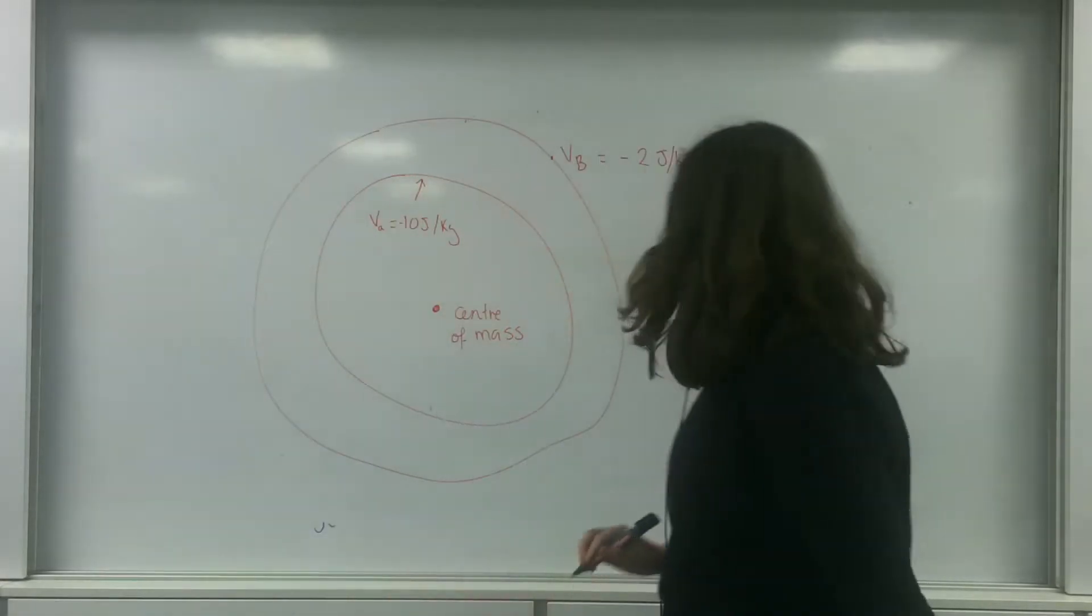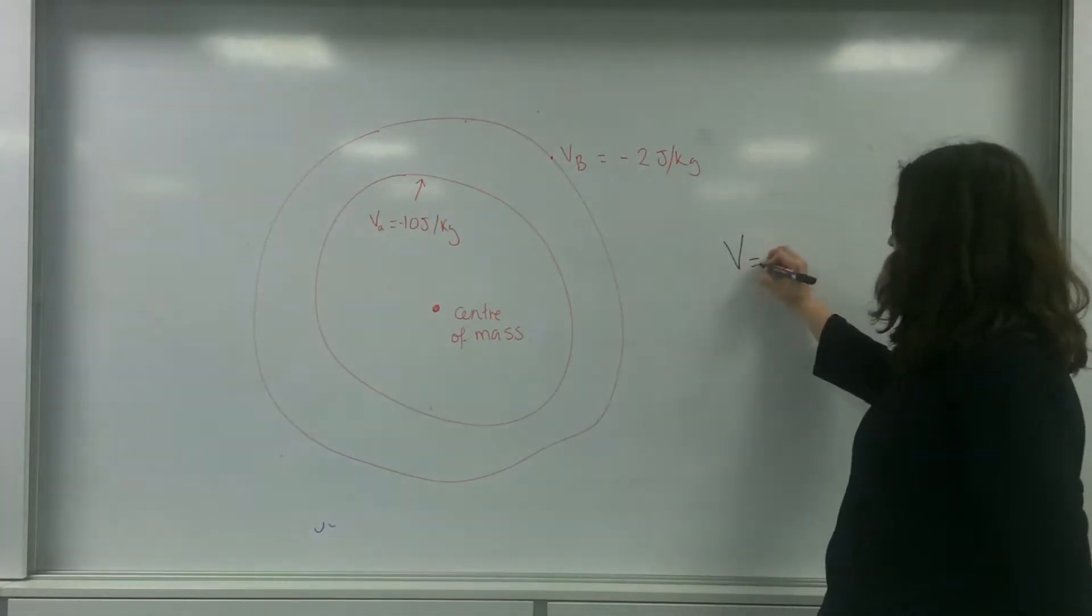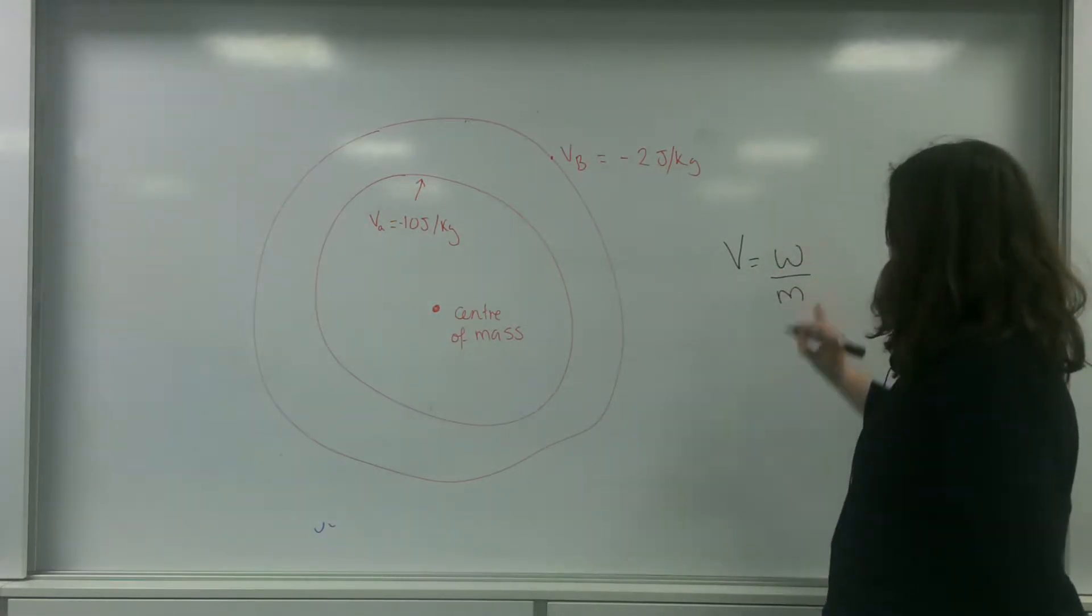Now just a reminder, the equation for potential in gravitational fields is the energy over the mass, or minus GM over r.